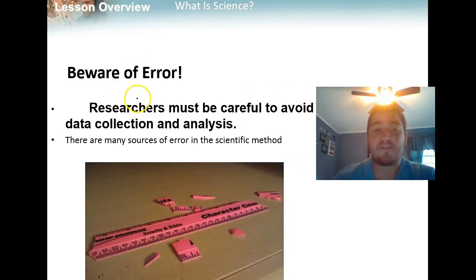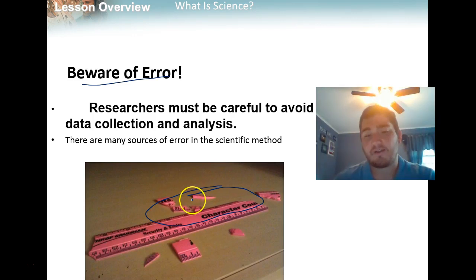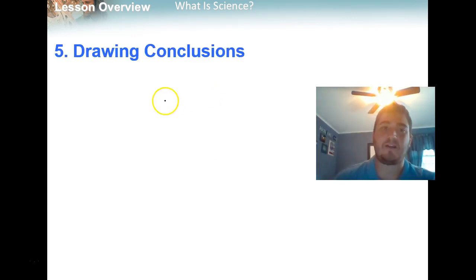We're going to collect and analyze this data to hopefully show us that our hypothesis is either correct or incorrect. When we analyze data, we need to be aware of error. Error is really just a way that we might mess up our experiment, and there's lots of sources of error. Some of them can be the tools we use to collect data. If you have a broken ruler like this, probably not a great way to measure how tall you're growing.